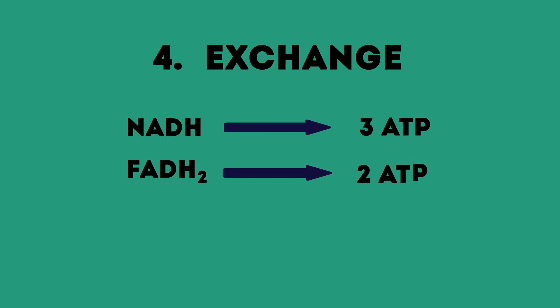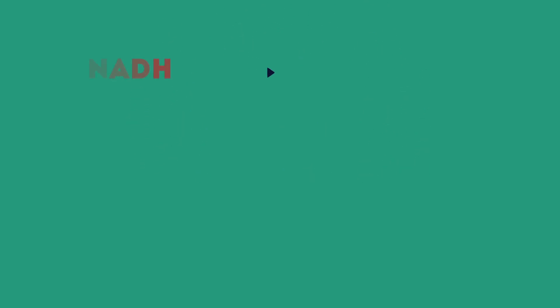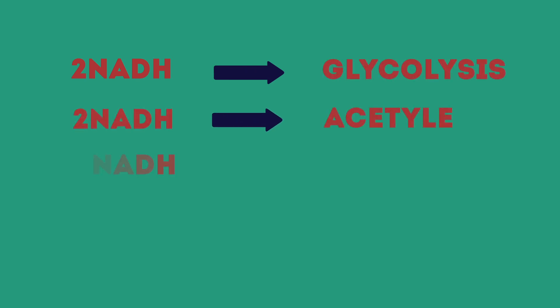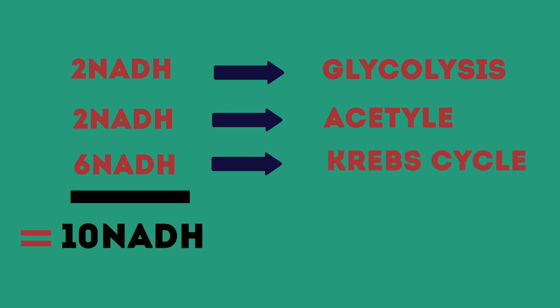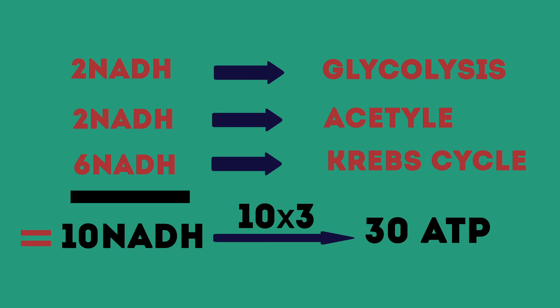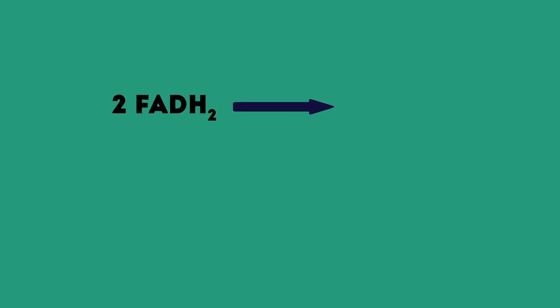Fourth, each NADH produces 3 ATP while each FADH2 produces 2 ATP. So let's take a look. We had 2 NADH from the glycolysis, 2 NADH from the formation of acetyl-CoA, and 6 NADH from the Krebs cycle. Now we have 10 NADH which equals 30 ATP. About FADH2, we only had 2 FADH2 from the Krebs cycle which equals 4 ATP.